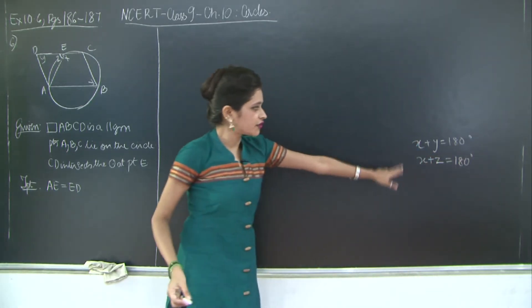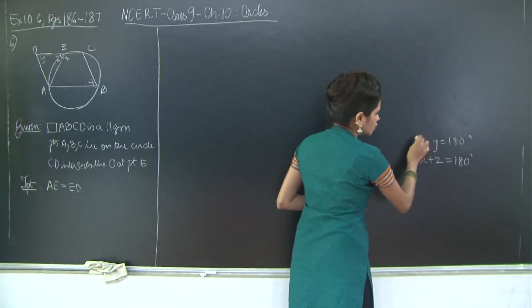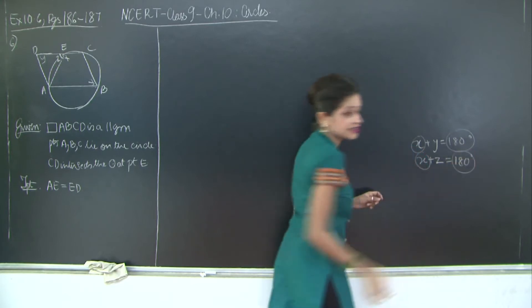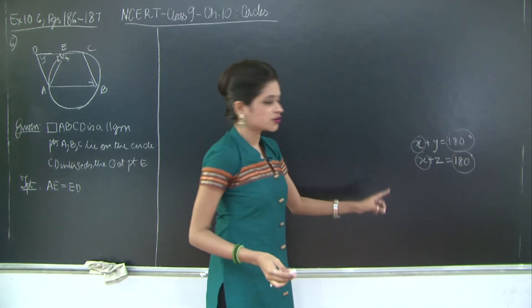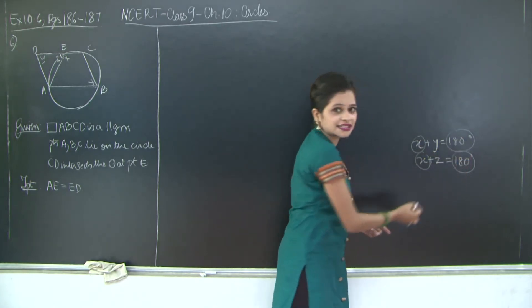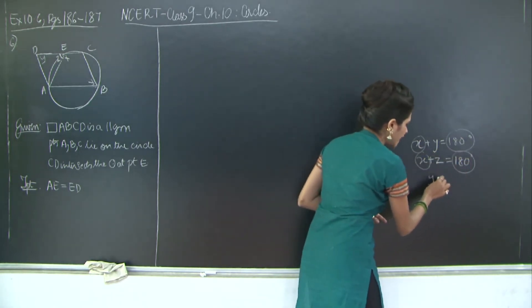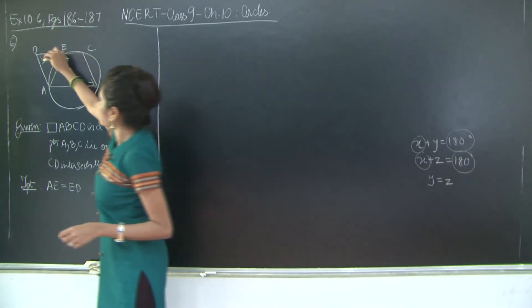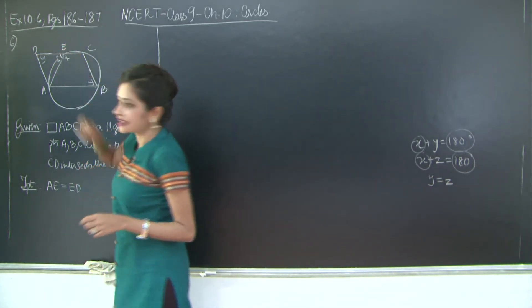What can I say from these two? See x, you have x here and x here. 180 degrees here and 180 degrees here. So equals that are equal to the same thing are equal to each other. You have x equal, you have 180 degrees equal. Therefore y is equal to z.